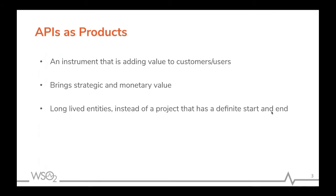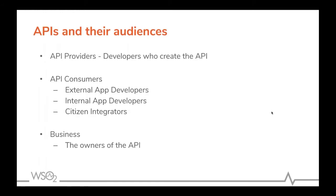You can better consider the impact that APIs have on your organization as well as on your customers. Let's take a look at the various audiences associated with APIs. First, you have API providers, which are the developers who create the APIs for an organization. Then you have API consumers, which fall into categories such as external app developers — third-party developers or partners external to the organization — and internal app developers, those developers within the organization who are consuming APIs.